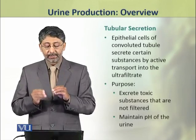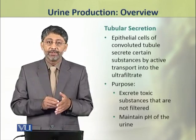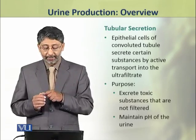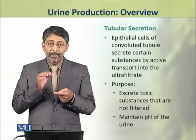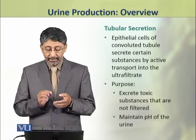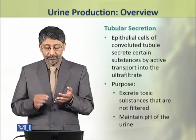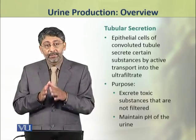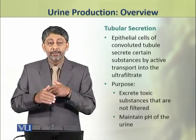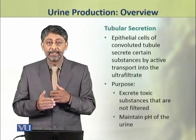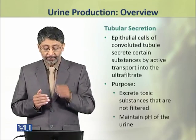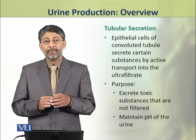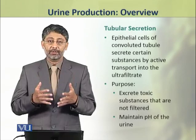Epithelial cells of the convoluted tubule also secrete some substances by active transport into the ultrafiltrate. The purpose of this tubular secretion is to excrete toxic substances which were not filtered — these are actively secreted into the outgoing urine. A second purpose of tubular secretion is the maintenance of the pH of the urine.